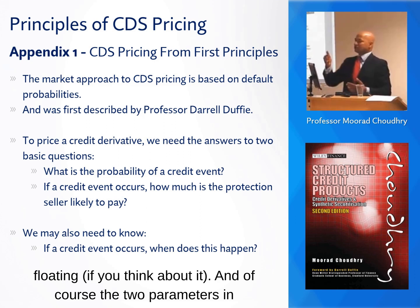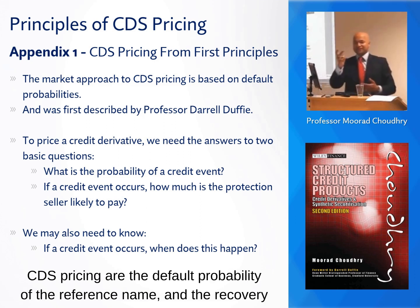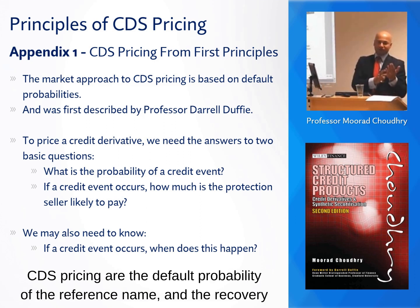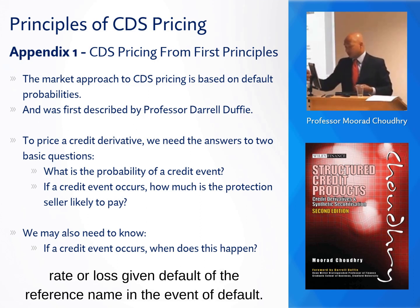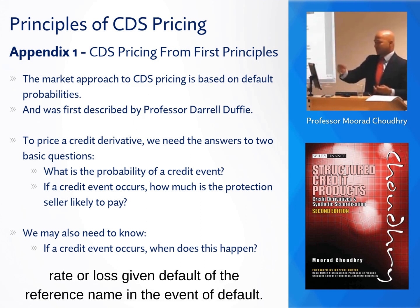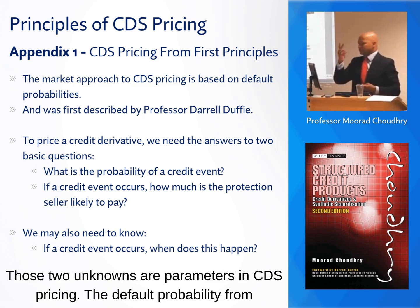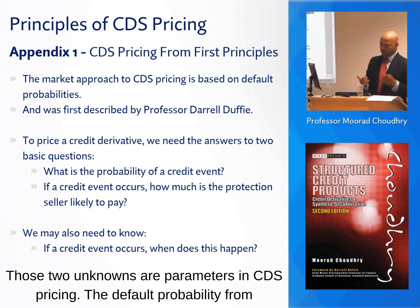The two parameters in CDS pricing are the default probability of the reference name and the recovery rate, or loss given default, in the reference name in the event of default. Those two unknowns are the key parameters in CDS pricing.